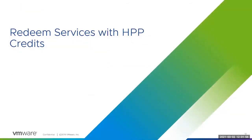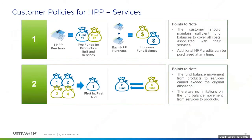How do you redeem HPP credits toward the purchase of services? Let's review the customer policies related to HPP services. The purchase of one HPP credit results in two fund balances made available to the customer: one for products and SNS, and another for services. With each HPP purchase, the fund balance will be increased. The customer should maintain sufficient fund balances to cover all costs associated with their services. Additional HPP credits can be purchased at any time. Similar to products, a first-in, first-out policy applies to services. Movement of credits from the products fund to the services fund cannot exceed the original allocation; however, there are no limitations on the movement of credits from the services fund to the products fund.